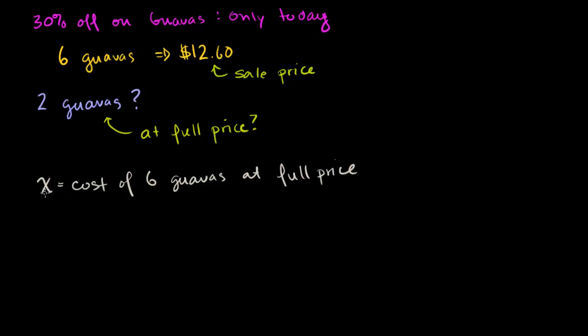So essentially if we take 30% off of this, we should get $12.60. So if we have the full price of six guavas, we're going to take 30% off of that. So that's the same thing as 0.30 or 0.3. So that's the full price of six guavas minus 0.30 times the full price of guavas. So I'm literally just taking 30% off of the full price. This is how we figure out the sale price. This is going to be equal to that $12.60 right there.